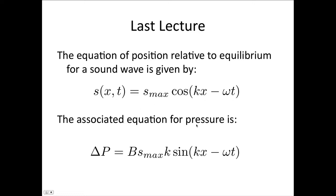The associated equation for pressure is the change in pressure equals B, the bulk modulus, times s_max k sin(kx - ωt). Now, it's important to note that one is a cosine function and one is a sine function. So these two things are out of phase by 90 degrees, or π/2 radians. When one is zero, the other is a maximum or minimum, and vice versa.